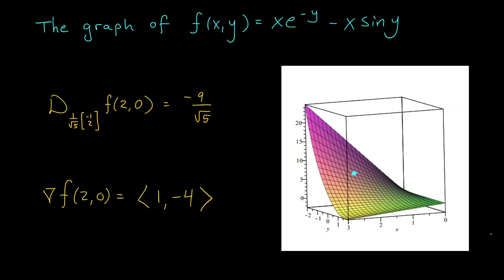I always like to look at the graph of my function at the end to appreciate that the math really does work out. Here's the graph of f(x,y). The directional derivative at (2, 0) in the direction of (-1, 2) is -9/√5, meaning starting at (2, 0) and moving in that direction, we see a negative rate of change — the z value decreases. The gradient vector (1, -4) points in the direction of steepest ascent: moving in that direction from (2, 0) takes us right up the side of the ridge. The math works, and you can see it in the graph.